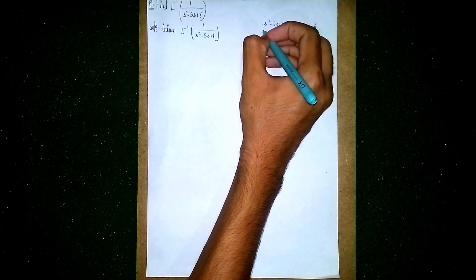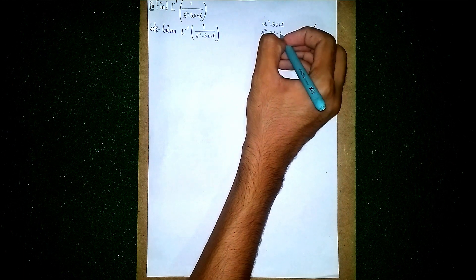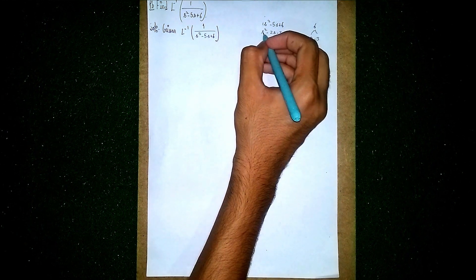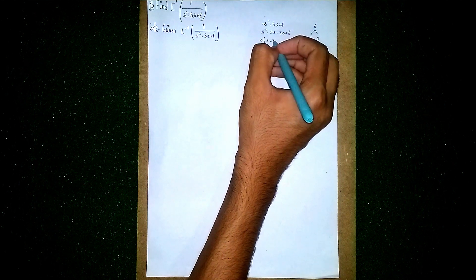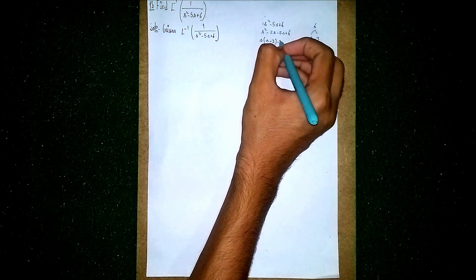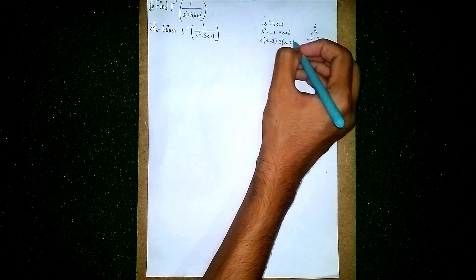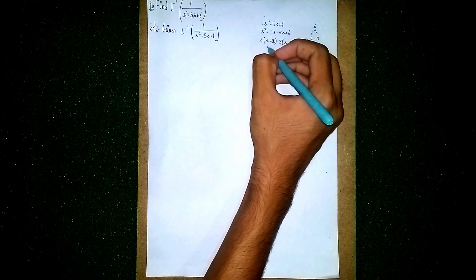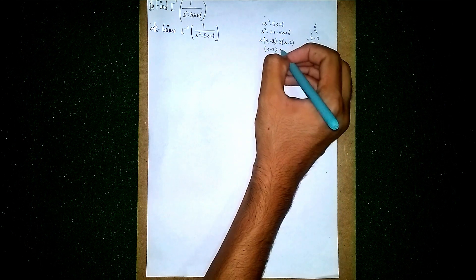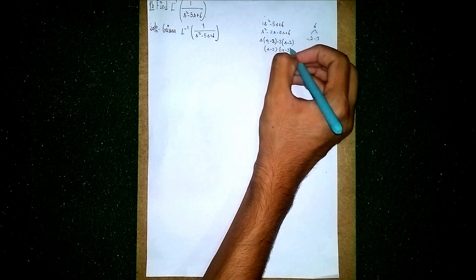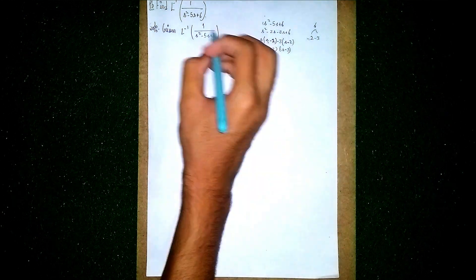So s-squared minus 2s minus 3s plus 6, then here s is taken common: s into s minus 2, then minus 3 taken outside as common, giving s minus 3 and s minus 2 — same. So take s minus 2 as common outside; instead of this quadratic equation, you can write it as s minus 2 into s minus 3.